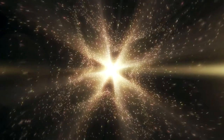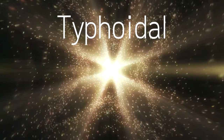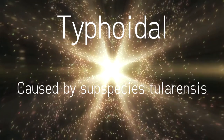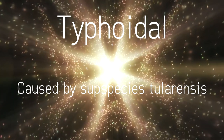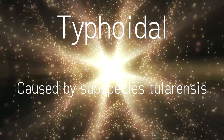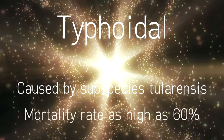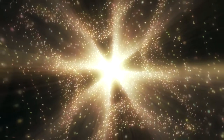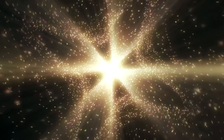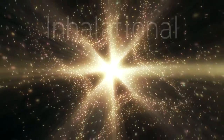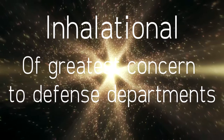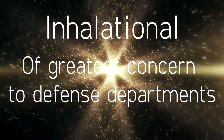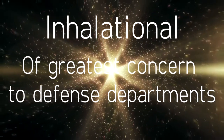An acute form, called typhoidal tularemia, is solely caused by the subspecies tularensis and is accompanied by septicemia, with a mortality rate as high as 60%. Lastly, the most acute and harmful form of tularemia is inhalational tularemia. This form of the disease will be considered in the context of biological terrorism.